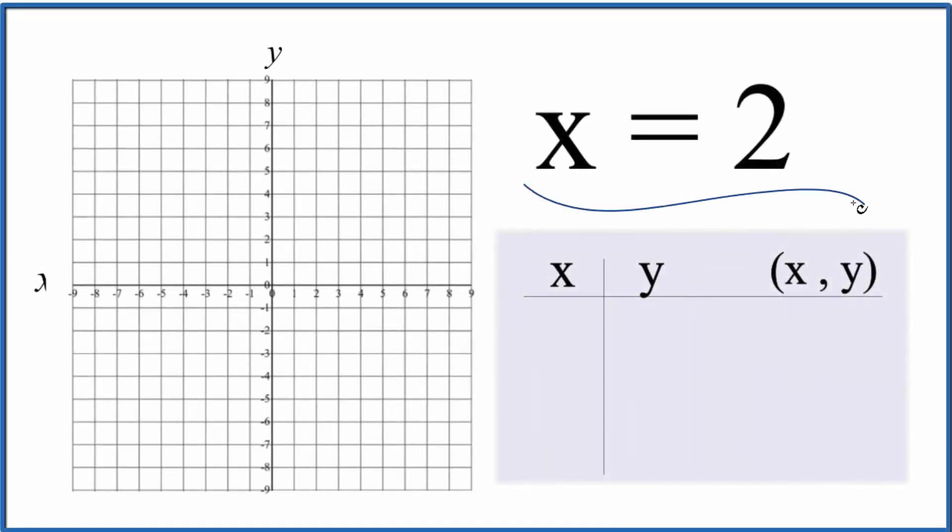Let's write the graph for x equals 2. So when we have x equals some number, it's going to be a vertical line.